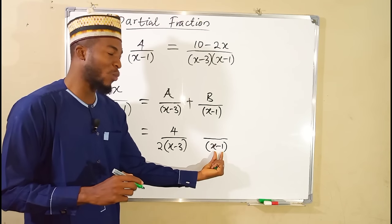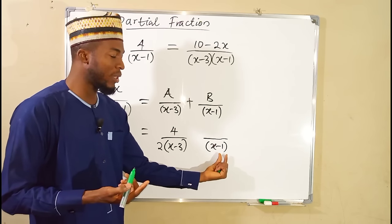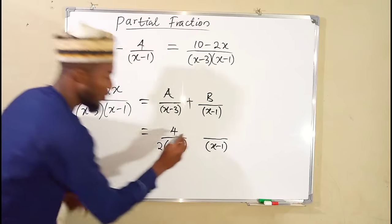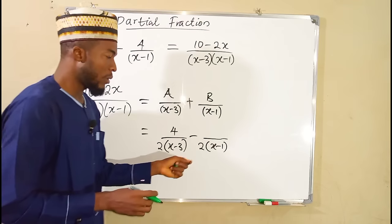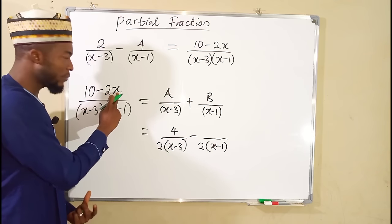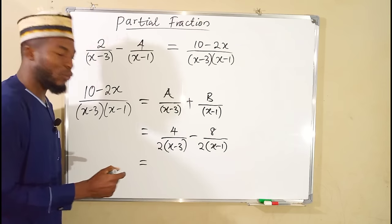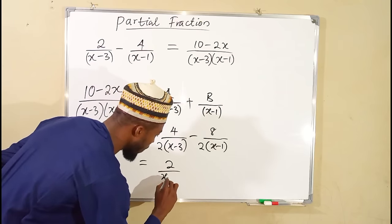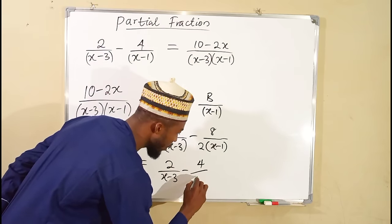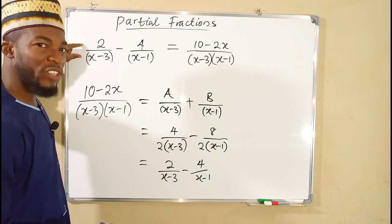For the second fraction with denominator x minus 1, we set x equals 1. We substitute into the other factor: 1 minus 3 is negative 2, giving us negative 2 on the bottom. For the top, we substitute x equals 1 into the numerator: 2 times 1 is 2, and 10 minus 2 is 8. So we have 8 over negative 2. Simplifying: 4 divided by 2 gives 2, and 8 divided by 2 gives 4. So our partial fractions are 2 divided by (x minus 3) minus 4 divided by (x minus 1), which are exactly the initial partial fractions.